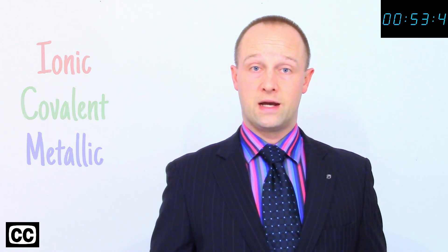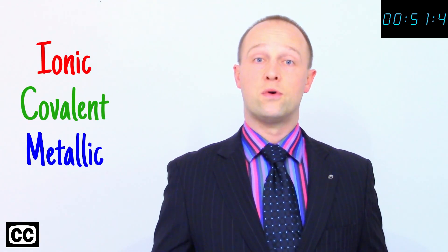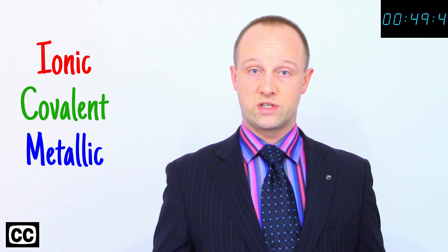There are three types of strong chemical bond: ionic, covalent and metallic, and they're all to do with electrons in the outer electron shells of atoms.